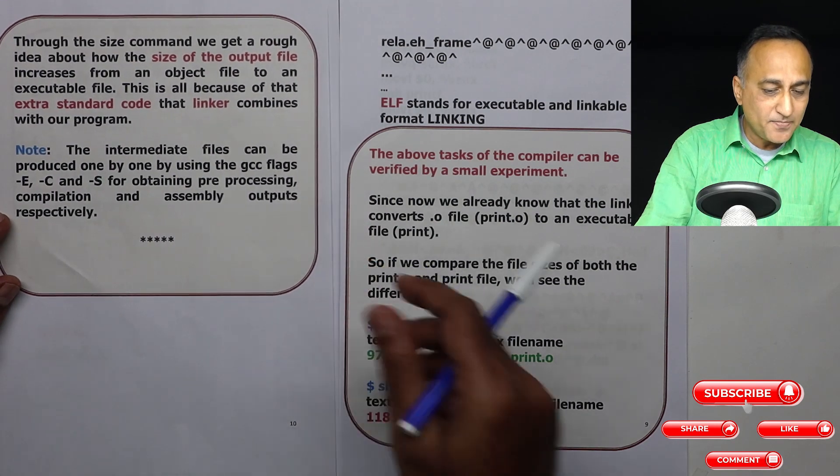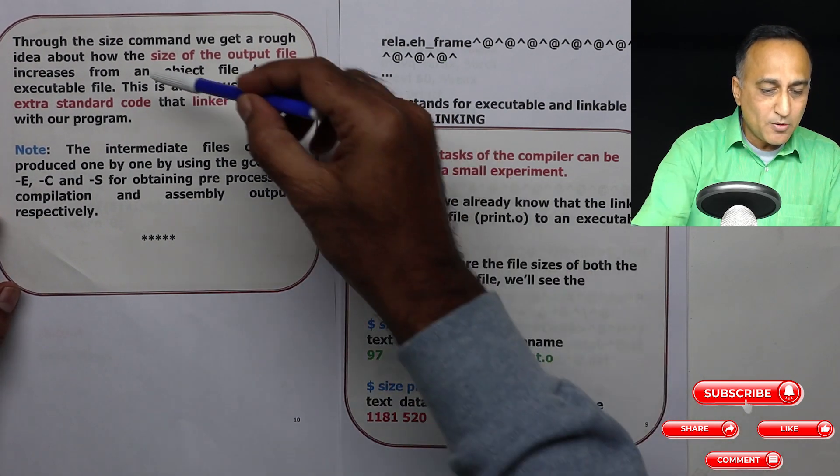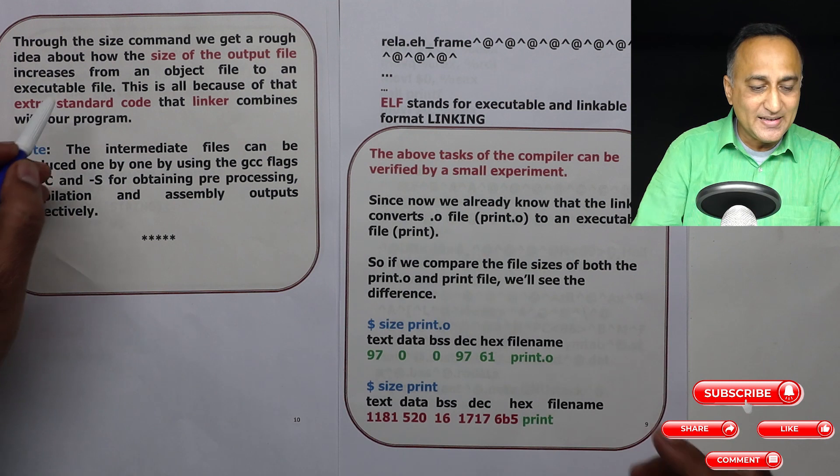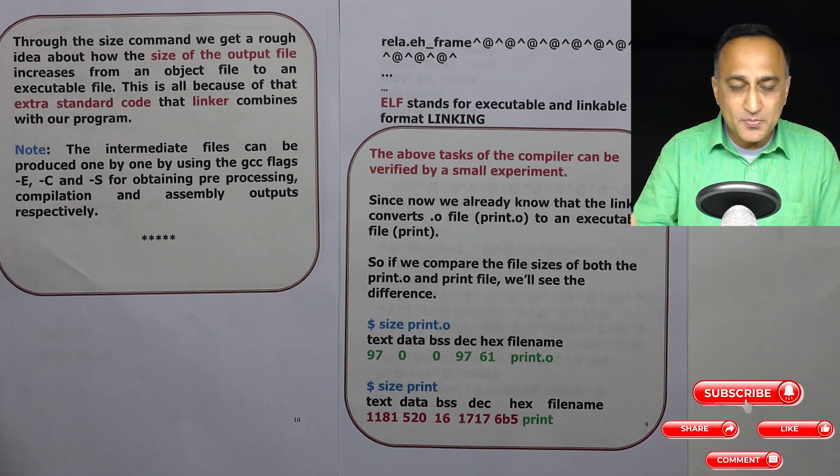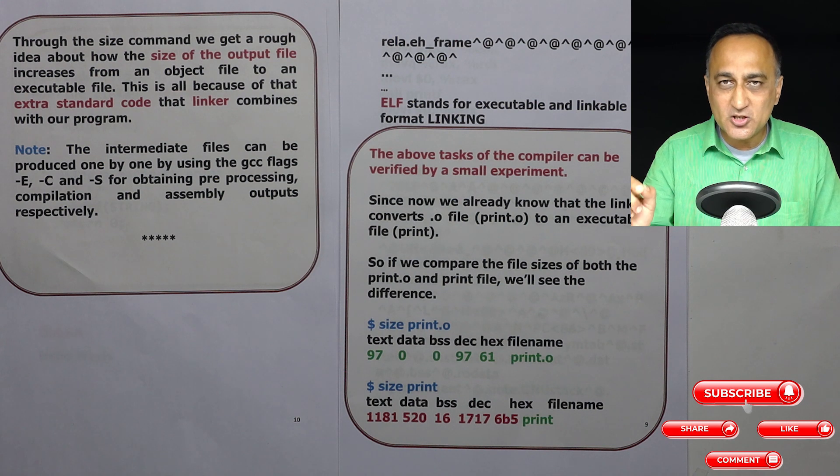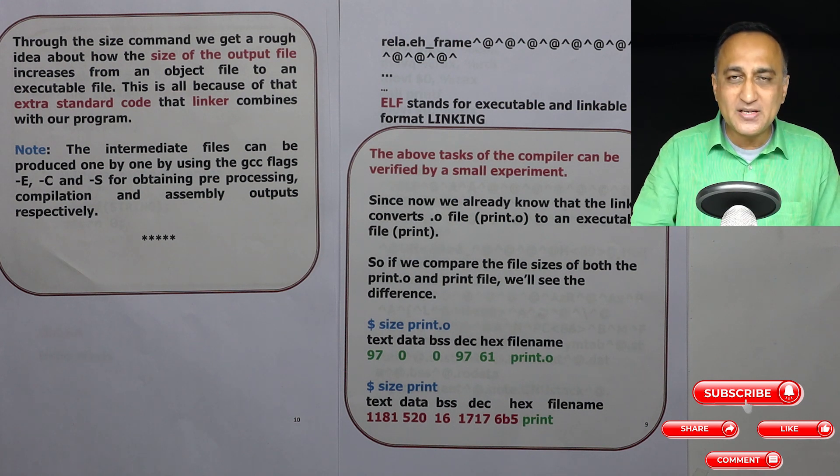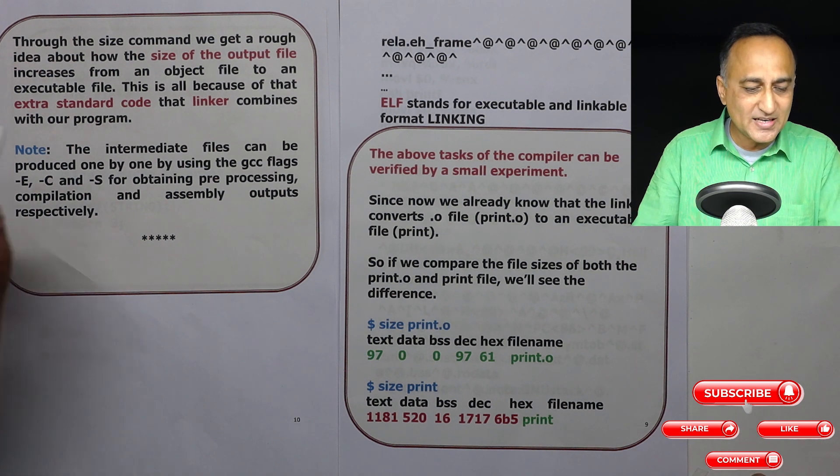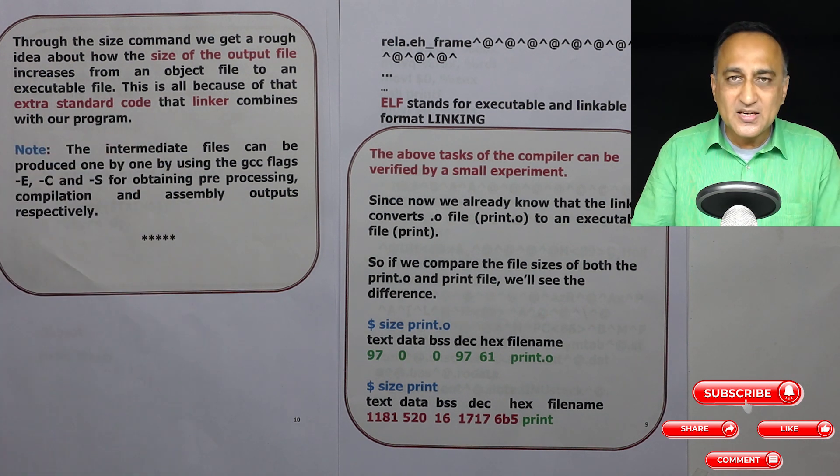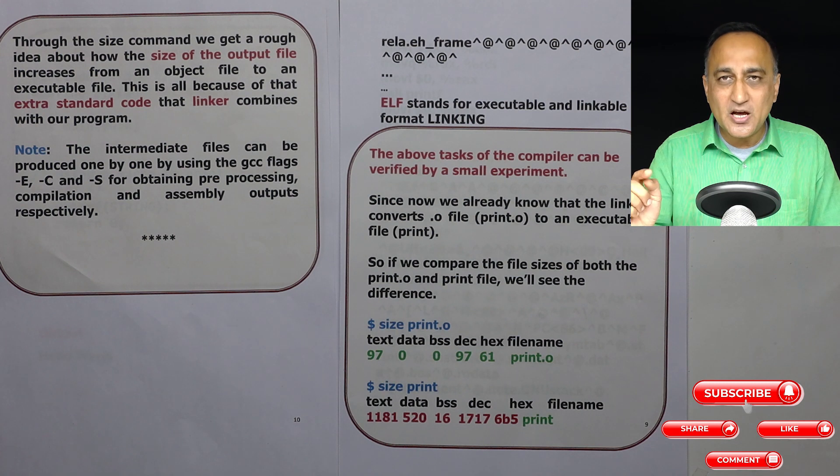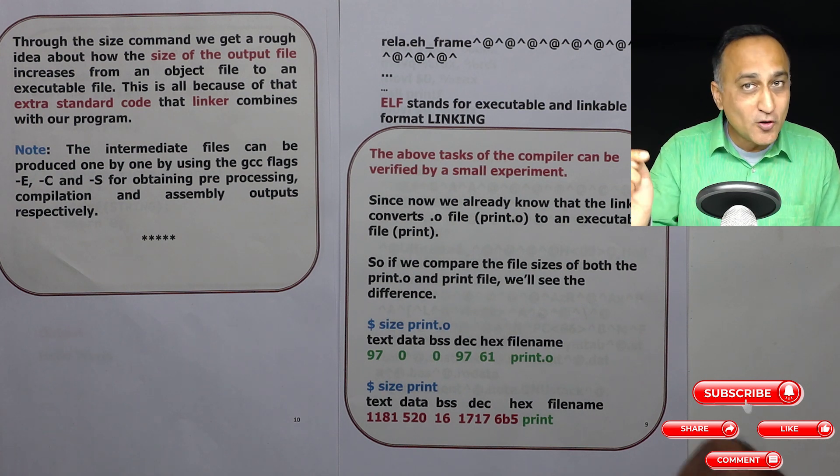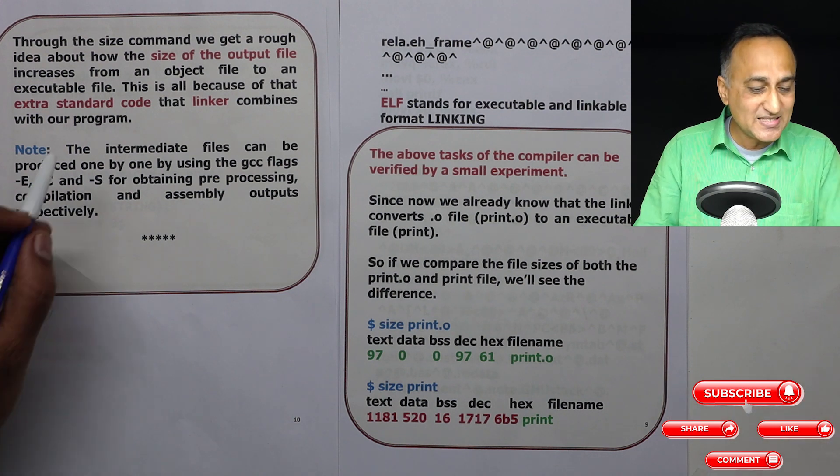Now through the size command we get a rough idea about how the size of the output file increased from the object file to the executable file. Object file is the file ending with the extension .o, executable is .exe on Windows and .out on Linux. This size increases because now the linker has taken the code of printf and joined it with your code. That is why the size has increased.